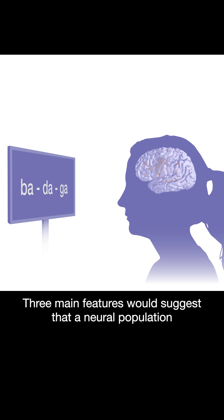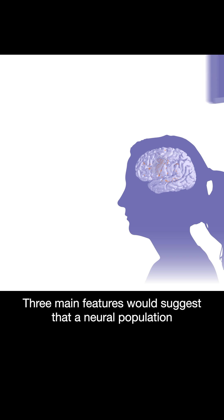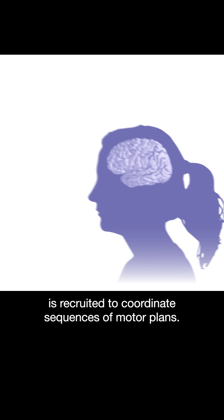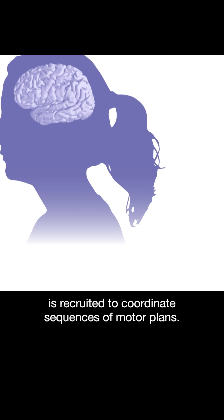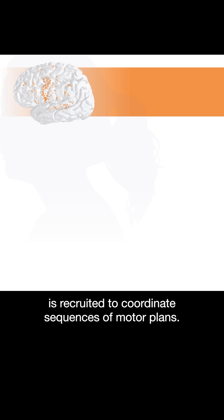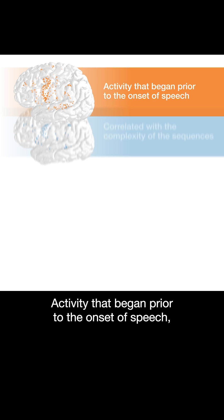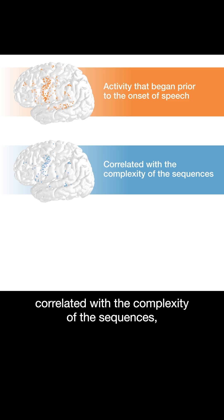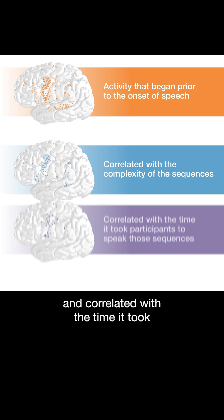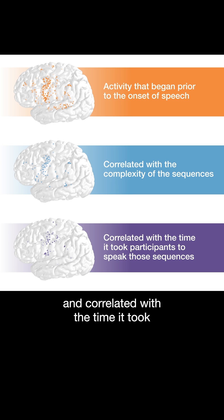Three main features would suggest that a neural population is recruited to coordinate sequences of motor plans: activity that began prior to the onset of speech, correlated with the complexity of the sequences, and correlated with the time it took participants to speak those sequences.